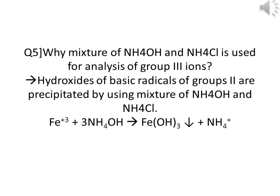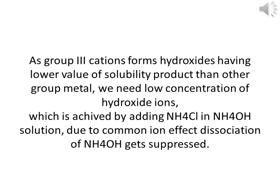Why is a mixture of NH4OH and NH4Cl used for analysis of Group 3 radicals? Hydroxides of basic radicals of Group 3 are precipitated using this mixture. We require hydroxide ions — for example, Fe³⁺ reacts with NH4OH to give a reddish-brown precipitate of Fe(OH)₃. Group 3 cations form hydroxides with lower Ksp values, so we need low concentration of OH⁻ ions. Adding NH4Cl suppresses dissociation of NH4OH via the common ion effect, giving low OH⁻ concentration so only Group 3 cations precipitate.